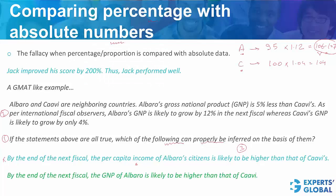One more answer choice: this one compares the total GNP of the two countries, and yes, it can be established that the GNP of country A is going to be more than the GNP of country C. This answer choice is correct.